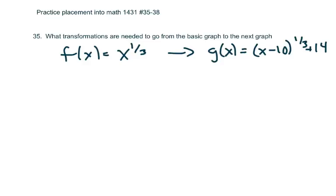35 is actually pretty easy. Basically, they want you to identify what transformations are needed to go from this basic equation to this one here. So the only thing that's changing is your horizontal shift and your vertical shift. So it's pretty basic.